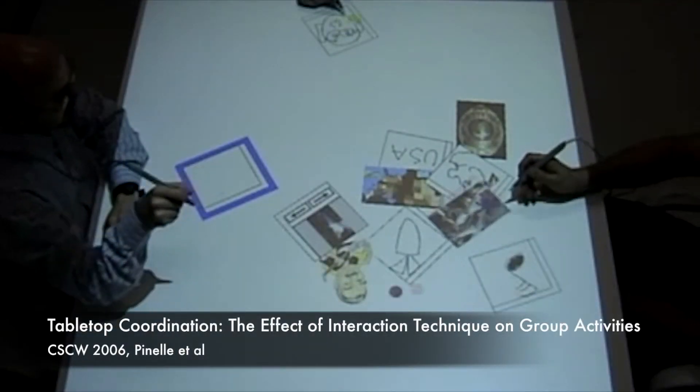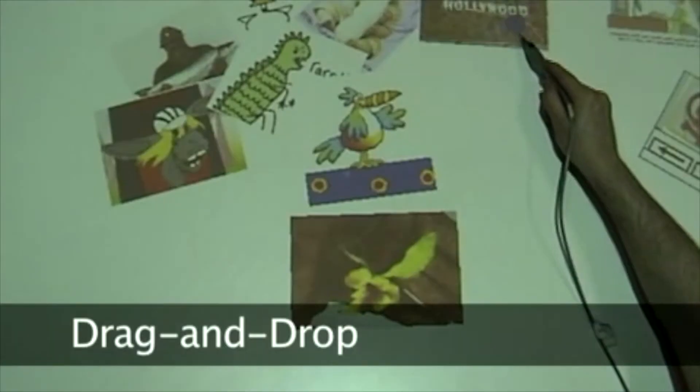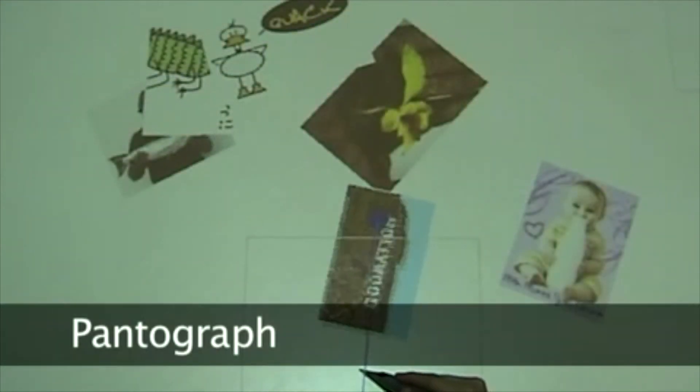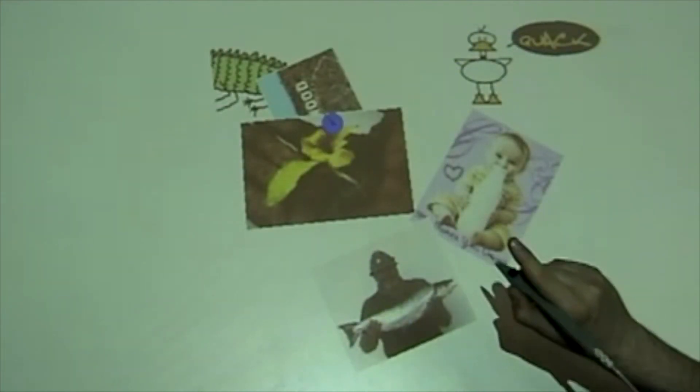The interaction techniques that are used in tabletop groupware systems can affect users' abilities to track others' actions and can have a corresponding impact on the way people are able to coordinate their activities. However, very little is known about how the different characteristics of the interaction techniques affect coordination in groups.